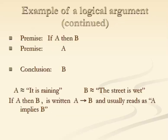In the case we just looked at with the street being wet: if it's raining, the street is wet, and that it is raining. We can present it formally: one premise says if A then B, where A is 'it is raining' and B is 'the street is wet'. The next premise says A — it is raining. By combining these two, we conclude B, that is, the street is wet.